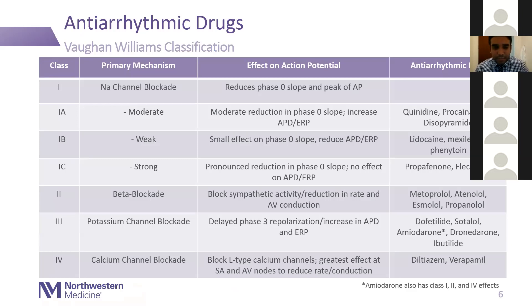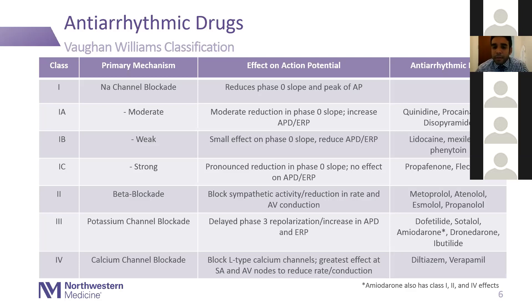The Vaughan Williams classification for antiarrhythmic drugs: Class one drugs are sodium channel blockers — they reduce the slope of phase zero and can decrease the peak of the action potential. Three main types: Class 1A have moderate binding and dissociation kinetics, prolong the action potential, prolong QT, and increase the effective refractory period. Examples are quinidine, procainamide, and disopyramide. Class 1B have rapid kinetics — they bind and dissociate quickly, acting as weak sodium channel blockers. They can narrow the QRS, narrow the QT interval, and reduce action potential duration. Examples include lidocaine, mexiletine, and phenytoin.